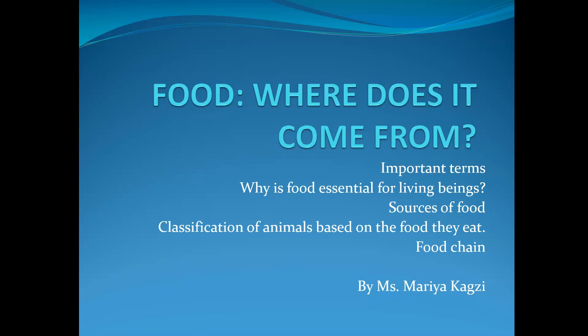Hello everyone. Today I will explain the chapter 'Food: Where Does It Come From?' It will include all the important terms, why food is essential for living beings, sources of food, classification of animals based on the food they eat, and the food chain.